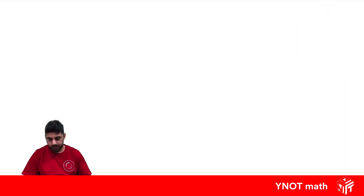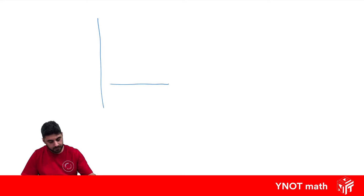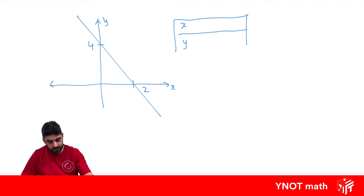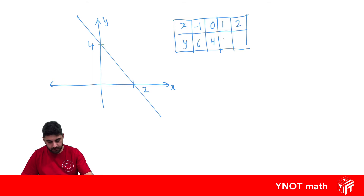Intercepts. Let's draw up a graph and its table of values. It's going through 4 here and 2 here. And this table of values is going to look like this: minus 1, 0, 1, 2, 6, 4, 2, 0.